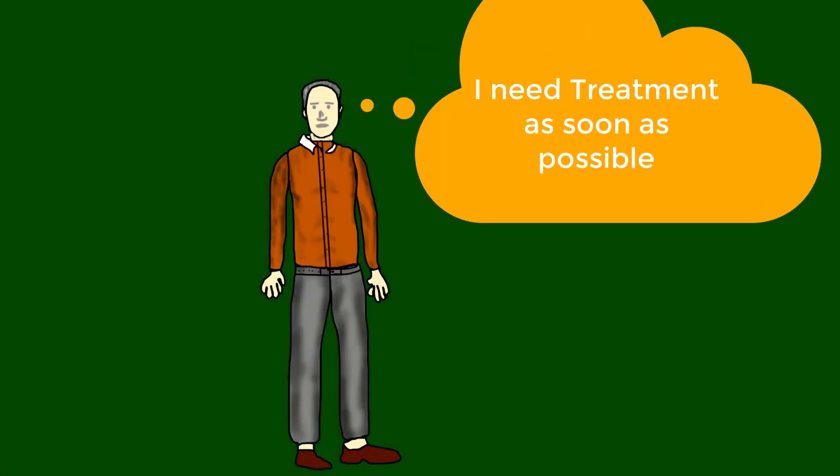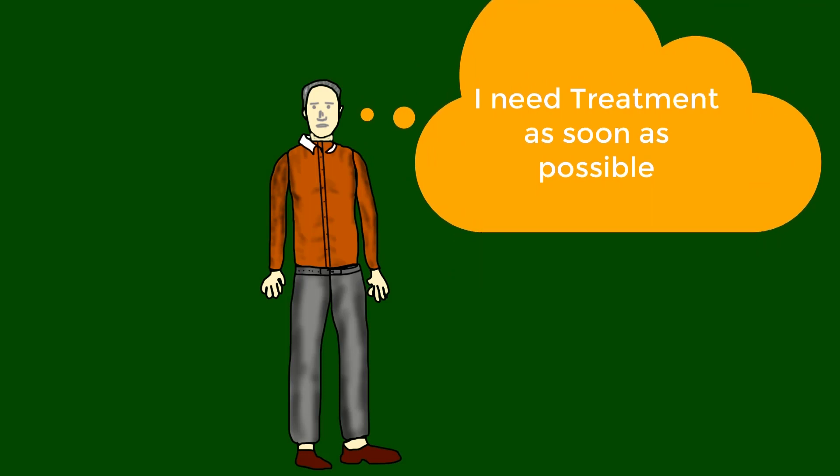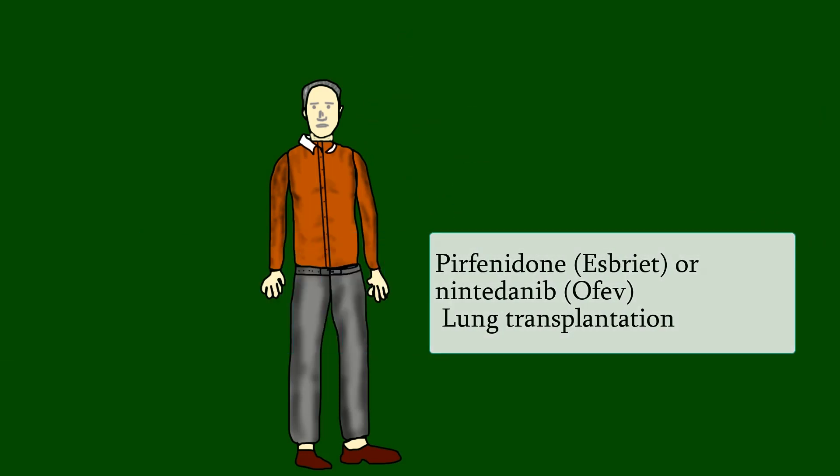Treatment options include pulmonary rehabilitation and supplemental oxygen, which have some benefits. Pirfenidone and nintedanib may slow the progression of the disease. Lung transplantation may also be an option.